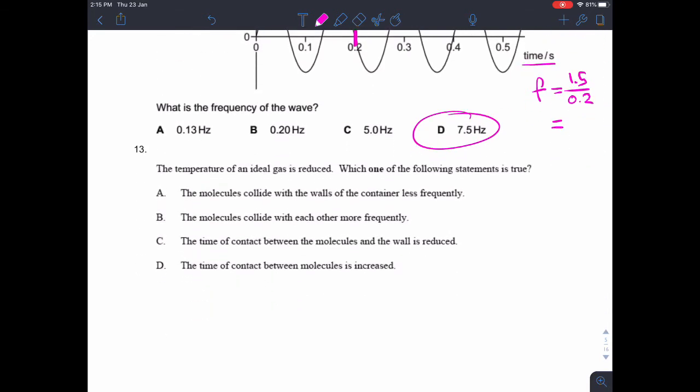Question 13. The temperature of an ideal gas is reduced. Which one of the following statements is true? Well, if the temperature is reduced then the average speed of the molecules is going to be lower. So in an ideal gas there is no time of contact between the molecules, we assume that's negligible. Again, in an ideal gas there is no time of contact between the molecules and the wall. The molecules collide with each other more frequently - they're not going to collide more frequently because they're moving with a lower average speed. So we're left with the molecules collide with the walls of the container less frequently, which effectively means the pressure is lower, which is true for a lower temperature. So it's A.